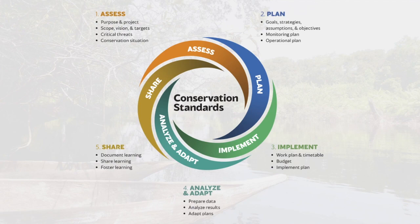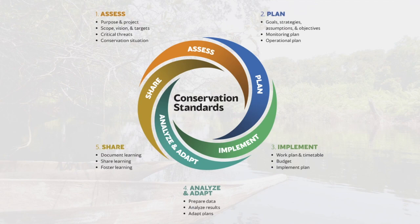Teams do not need to start with step one, Assess. Although there are additions and improvements in 4.0, the core standards and principles have not changed much. The five key steps are still there, but the language has been simplified to more directly communicate what each step entails. CMP, in consultation with some CCNET partners, also decided to use the term Conservation Standards as a shorthand reference for the Open Standards for the Practice of Conservation, which remains the official name. Version 4.0 also contains several other refinements, such as greater detail on the later steps of the cycle and refinements based on lessons learned. You can check out version 4.0 on the Conservation Standards website.